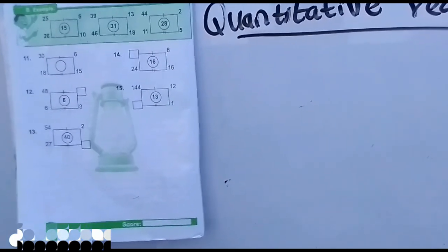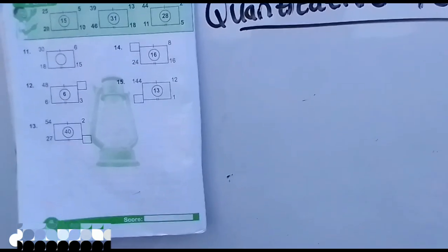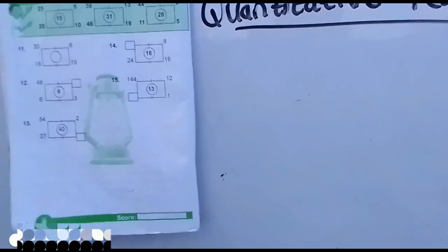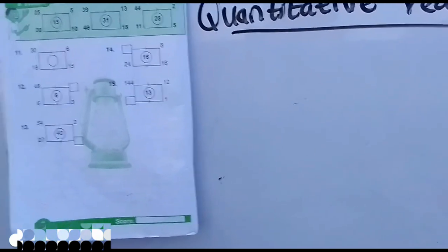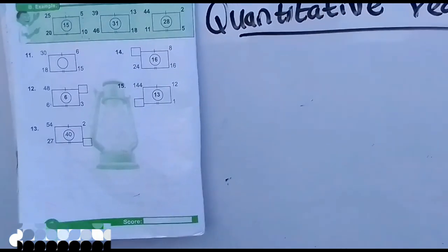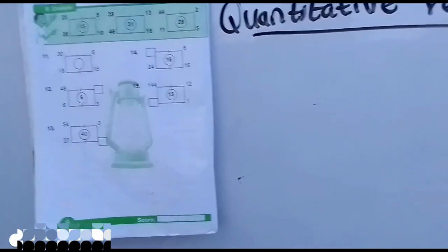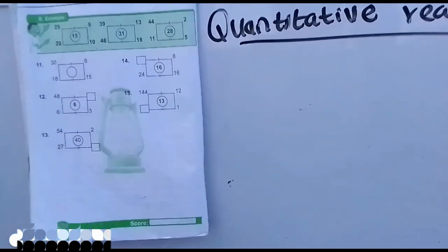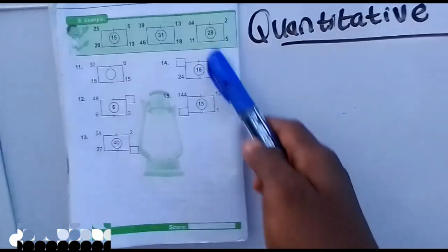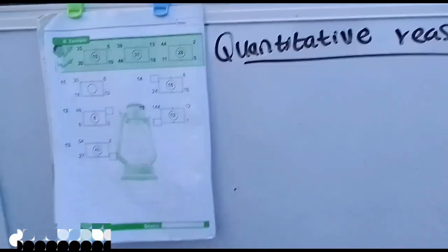If you do 25 minus 5 you have 15. If you do 20 minus 5 you have 10 and the middle one. They structured it in the shape so anything you do here will end up in this middle one. That's why they put it in the middle.